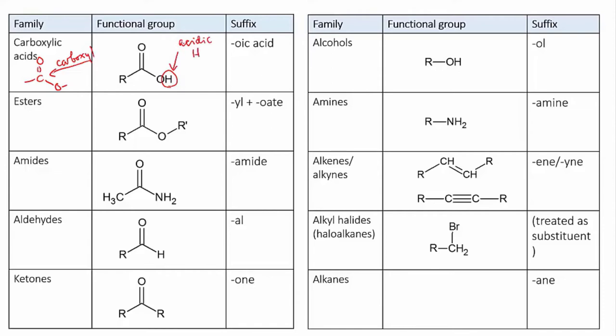When you name a carboxylic acid, you add '-oic acid' onto the name. For instance, if you put a carboxylic acid group onto ethane, that would become ethanoic acid. In an amide, the alcohol of the carboxylic acid is replaced by an amine group, and to name this, you add '-amide' to the name. So in this case, ethane with an amide group on would be called ethanamide.